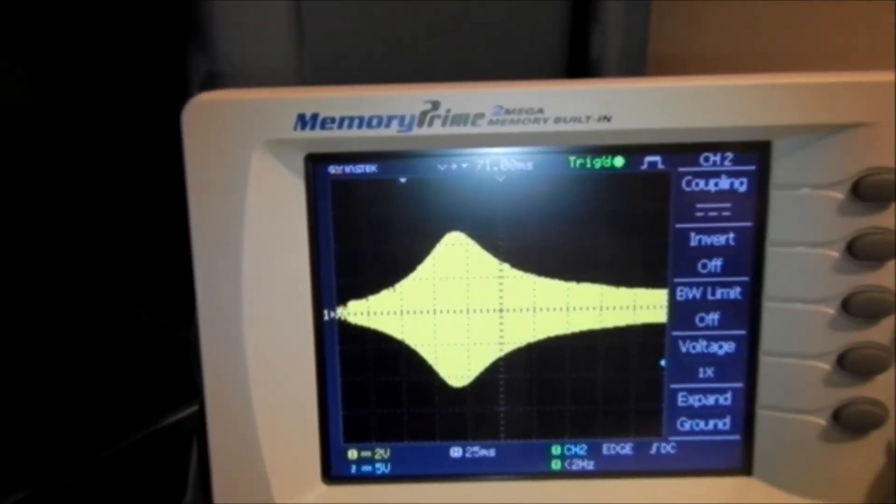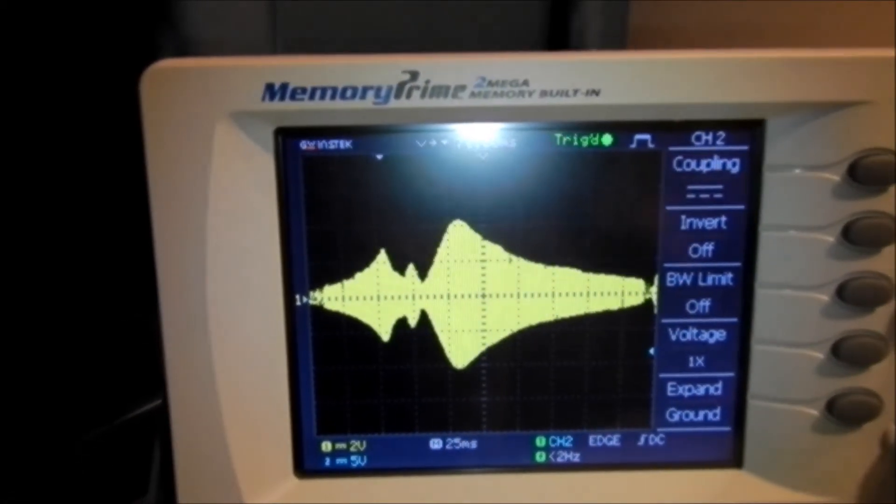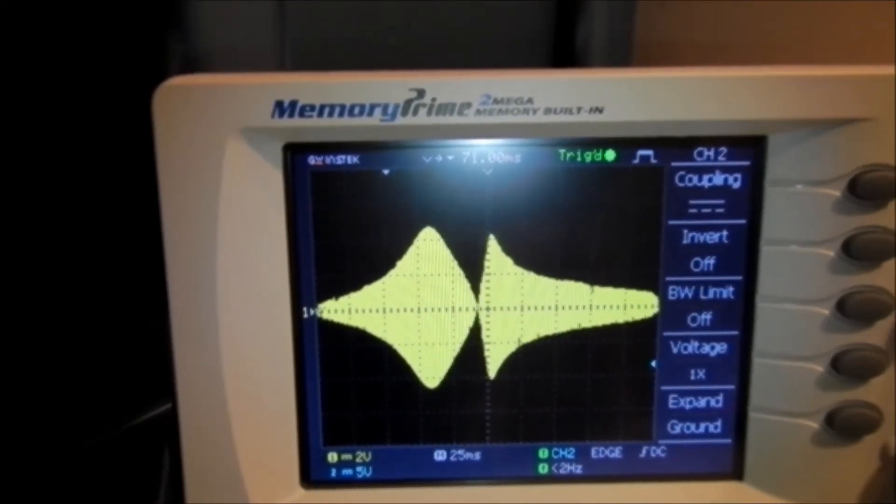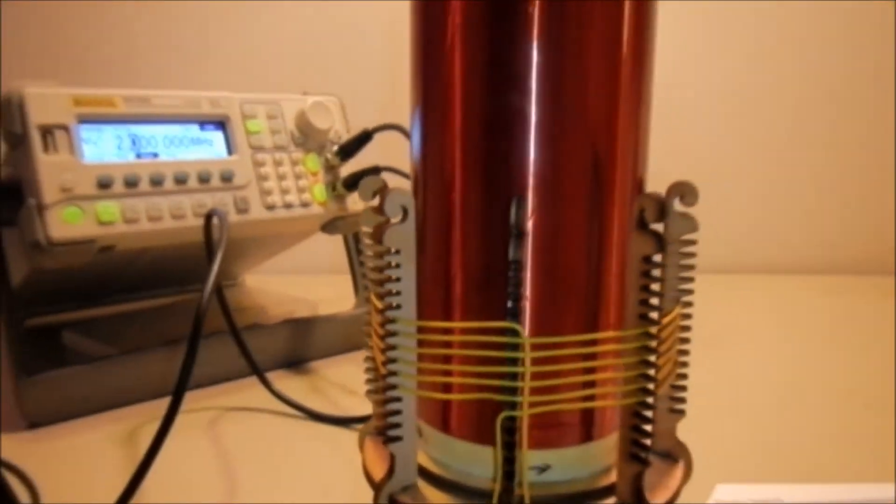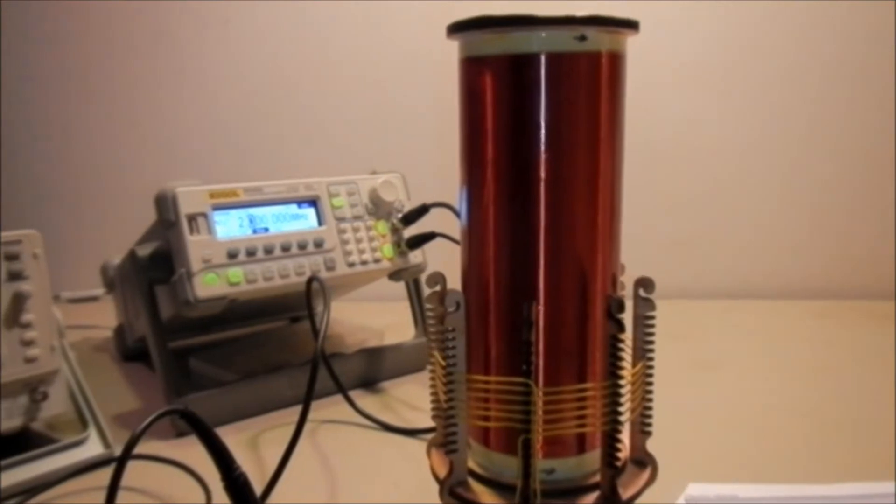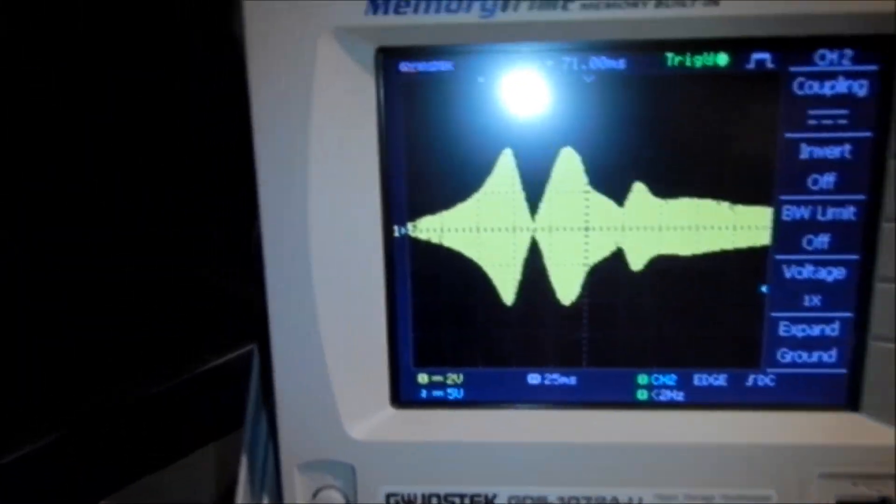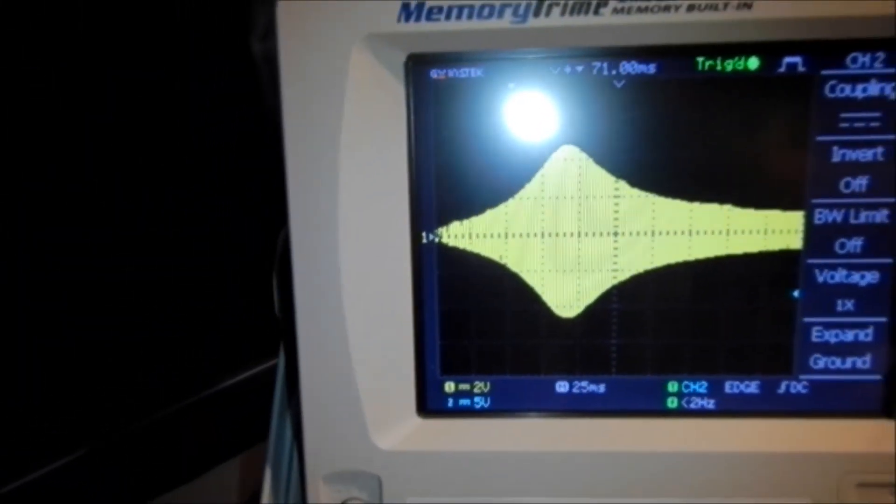Tesla coil is out of the circuit. Now I'm putting the Tesla coil into the circuit. That's over coupled. And now let's just do just right.